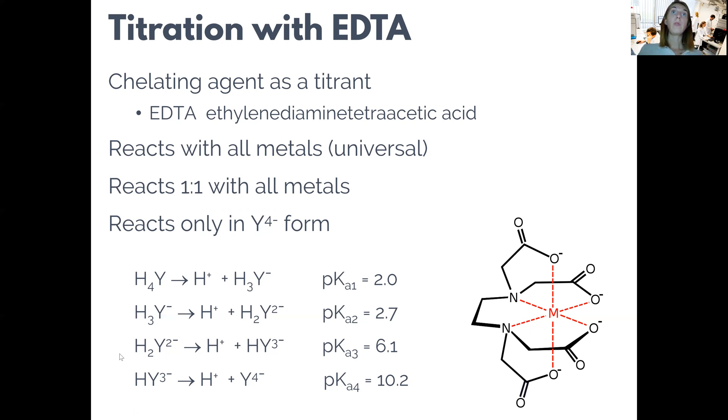EDTA has six sites available for coordination bonds with the metals. The structure of the metal-EDTA complex or metal cation-EDTA complex is shown on the right-hand side below.